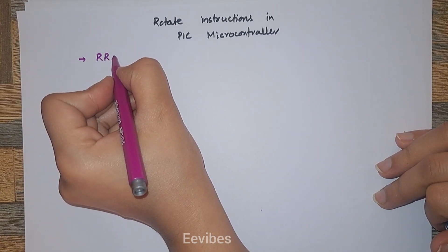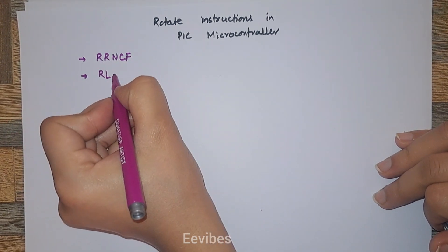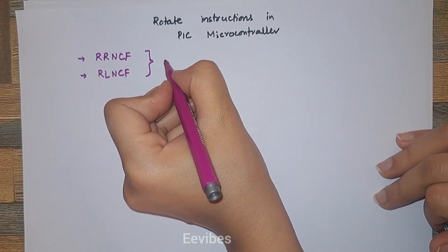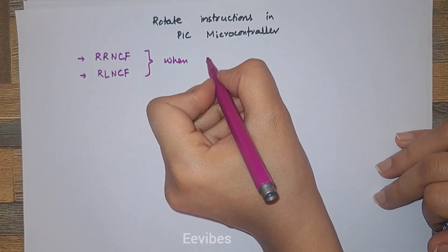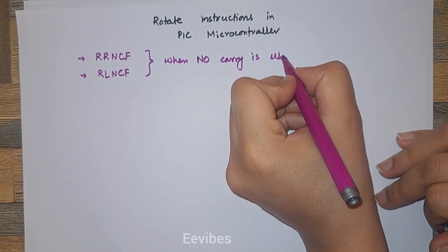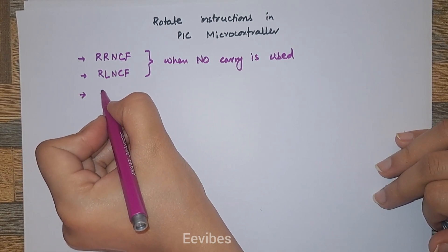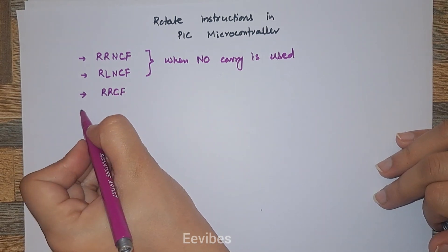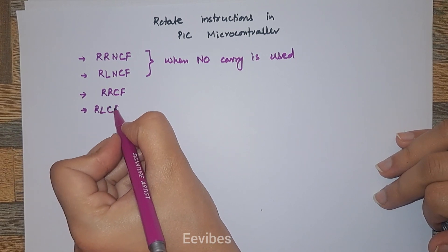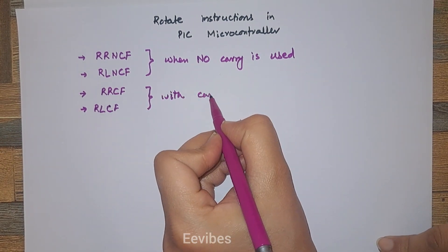The four rotate instructions are: rotate right the contents of the file register without carry, rotate left the contents of the file register with no carry — these two instructions are used when we do not monitor the carry of the status register. The other two instructions that use the carry are: rotate right the contents of the file register with carry, and rotate left the file register while monitoring the carry.